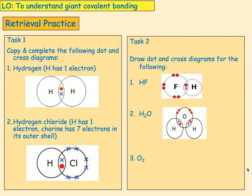Oxygen has six in its outer shell. In order to get eight, it needs to perform a double covalent bond with another oxygen. Both of the oxygens need two more, so therefore there are two dot, cross, dot, cross — that is a double covalent bond.